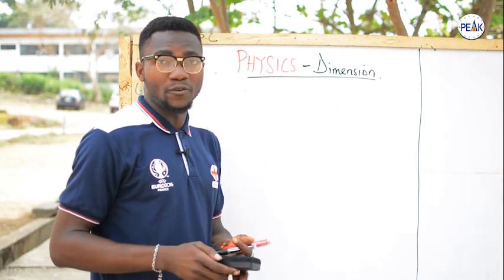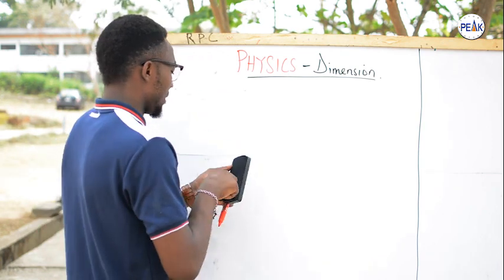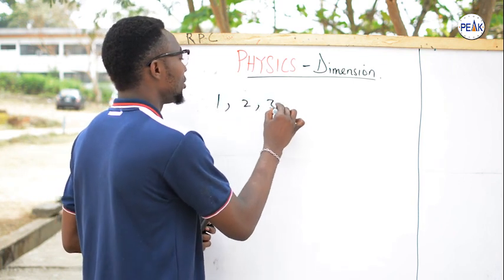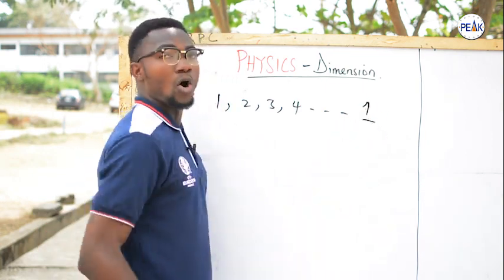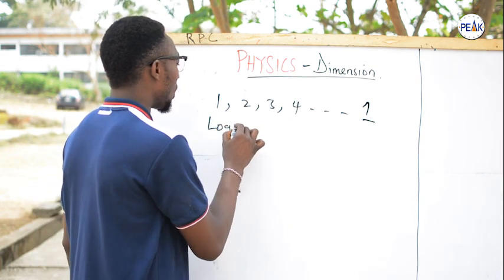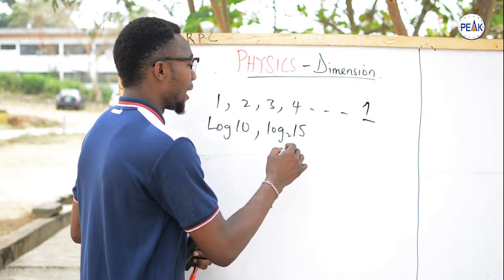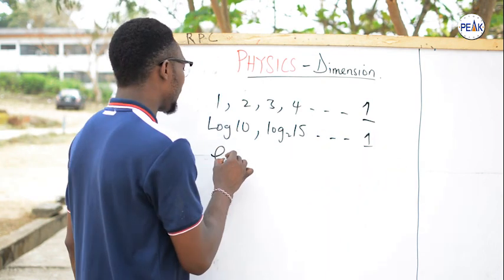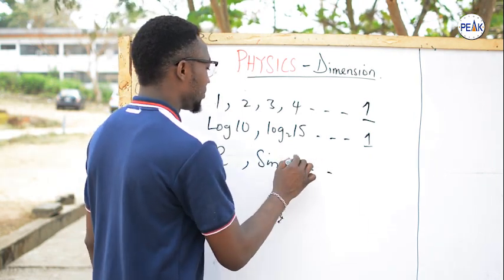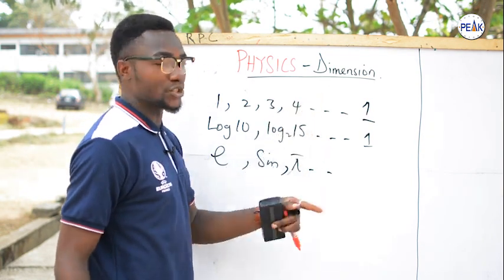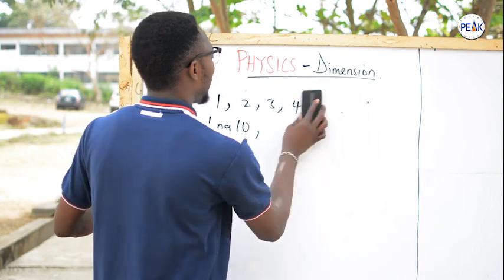One other thing to note is that all numbers — 1, 2, 3, 4, whatever — have a dimension of 1. All logarithmic functions, all exponential functions, all trigonometric functions, and so on, also have a dimension of 1. Pi is also part of this. That means whenever you encounter these things in an equation, their dimension is unity — that is, 1.